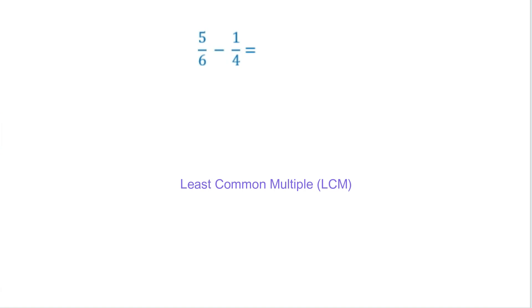So if I had 6, 6 times 1 is 6, 6 times 2 is 12, 6 times 3 is 18. And then let's look at 4. 4 times 1 is 4, 4 times 2 is 8, 4 times 3 is 12. So now I look, and I have a common multiple of 12.